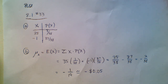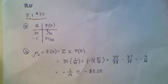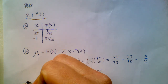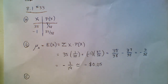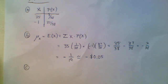Now Part C says: suppose that you play the game 100 times so that n equals 100. Describe the sampling distribution of x-bar, which is the mean amount won per game. So remember, we talked in 8.1 notes about what it means to describe the sampling distribution of x-bar — they're asking you for the shape, center, and spread of the distribution.